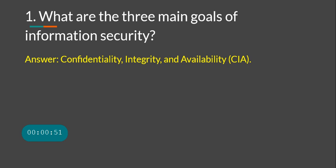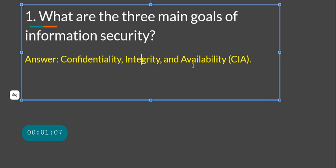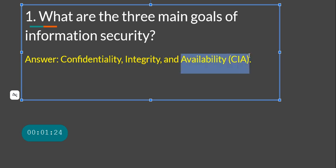The first question I want to cover is: what are the three main goals of information security? This one you should all know — it is the CIA triad: confidentiality, integrity, and availability. Understand what they do and how you implement them. For example, confidentiality relates to encryption, integrity to hashing, and availability to load balancers and proxies.